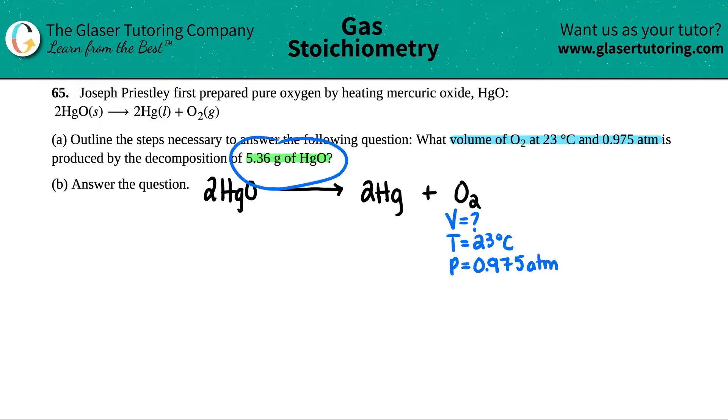They tell us that we're decomposing it from 5.36 grams of HgO, so I have 5.36 grams of this.